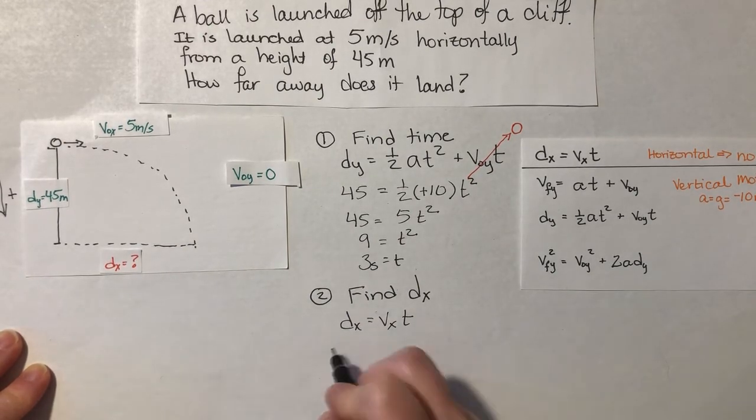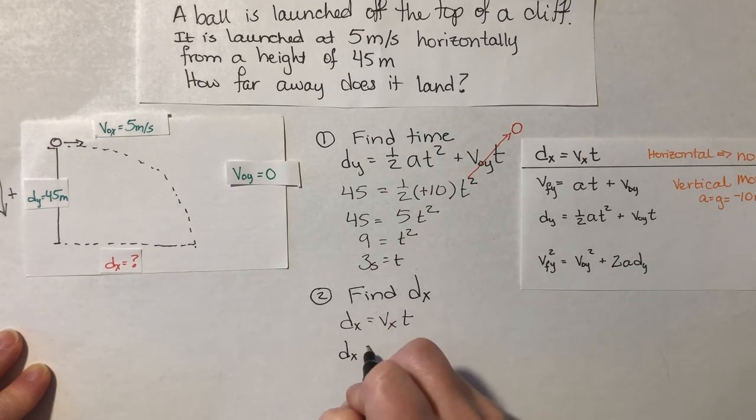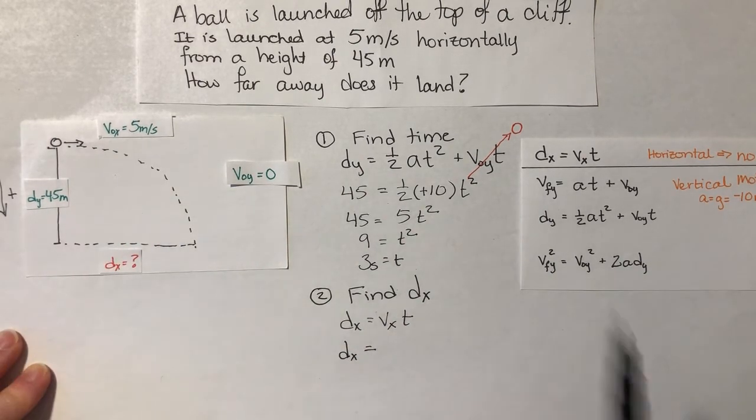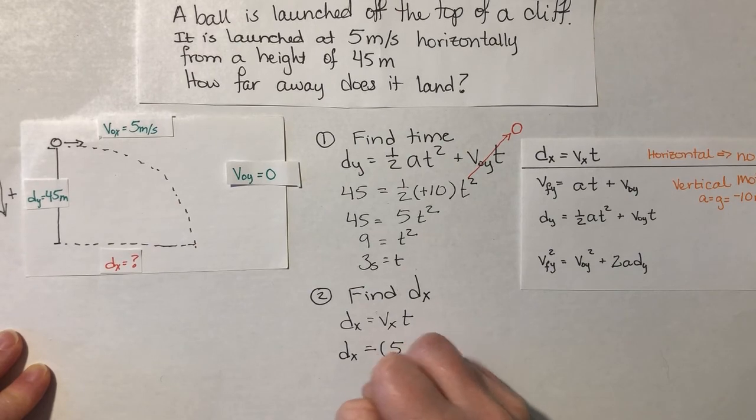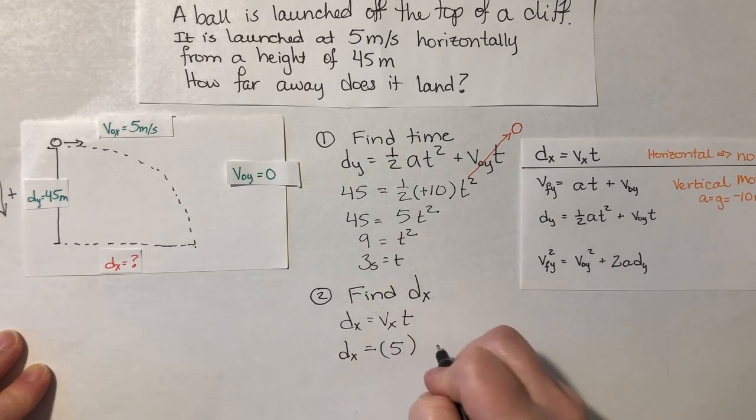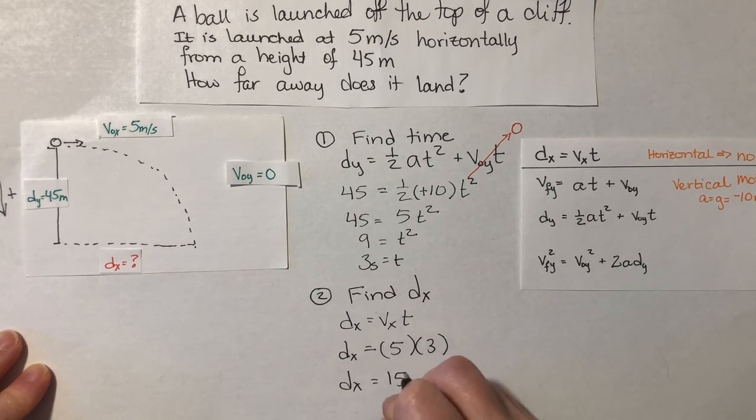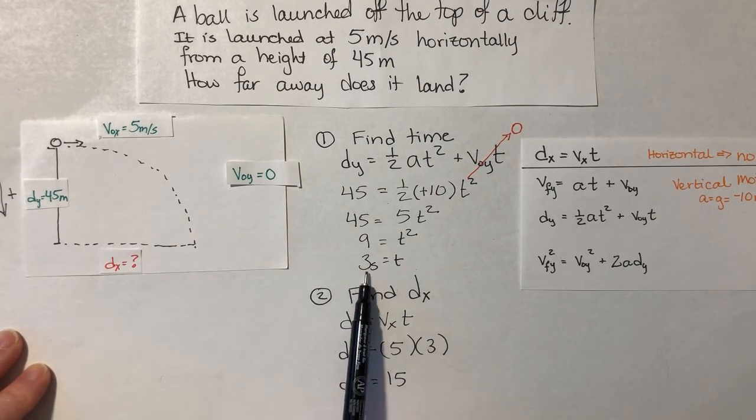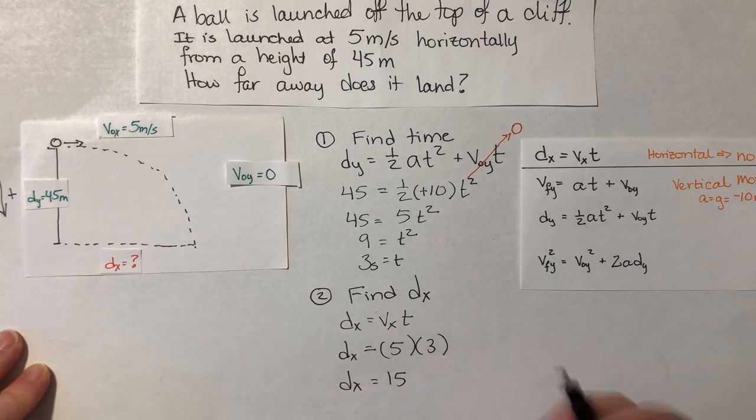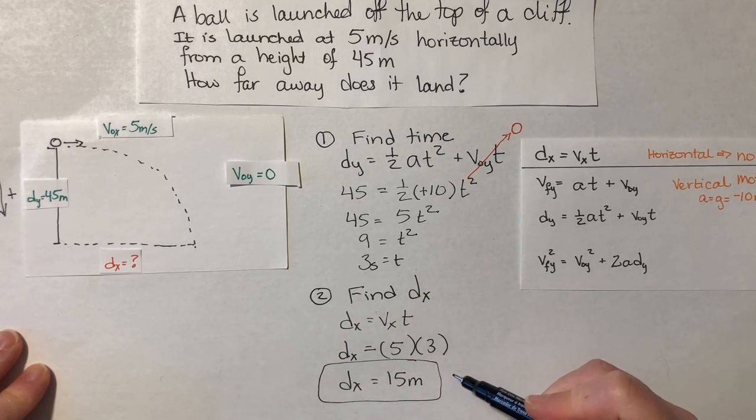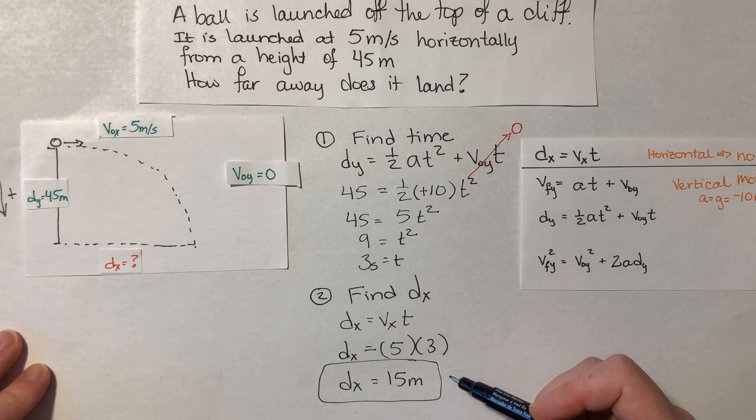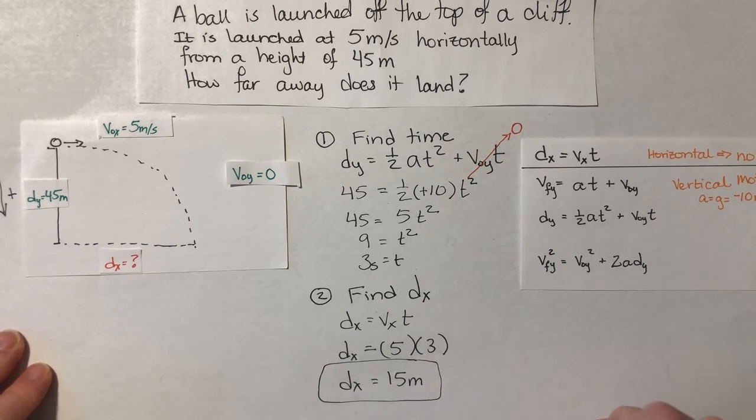I'm going to say dx equals vx times t. dx is my unknown, so I don't need to do any rearranging of my equation equals vx 5 meters per second times time, which I just solved for here times 3. dx equals 15. Now what units do we want to use here? So the 5 are meters per second, and the 3 are seconds. And when I multiply meters per second by seconds, I end up with just meters. So the total distance away from the clifftop that my ball lands when it's been launched at 5 meters per second, and the cliff is 45 meters tall. It's 15 meters. And that's your final answer.